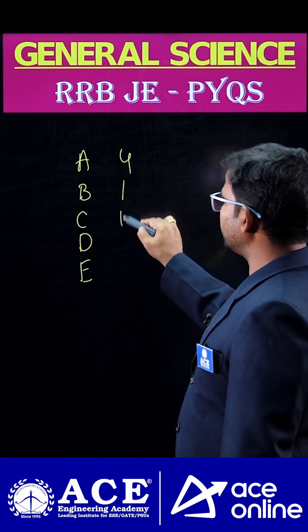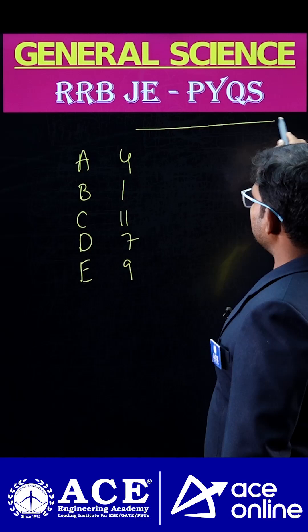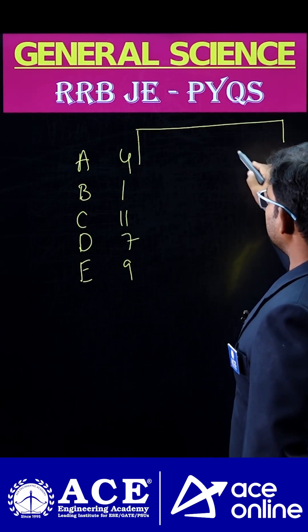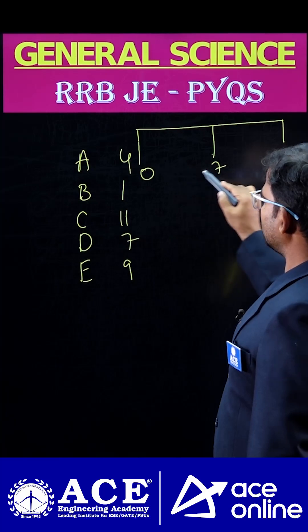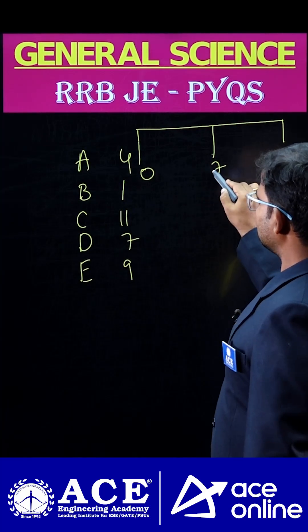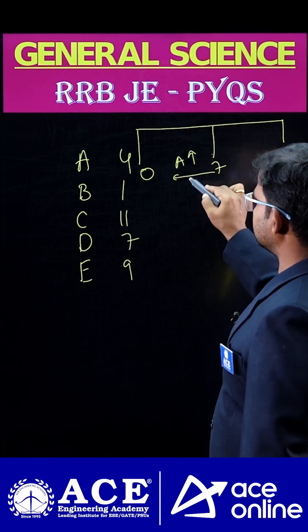We already know that on the pH scale, the values are calibrated like this: from 7 to 0, acidic nature increases, which means H+ ion concentration increases. If acidic nature increases, then H+ ion concentration increases.